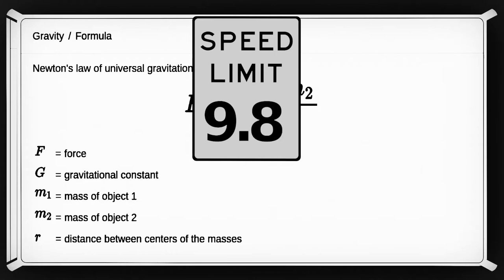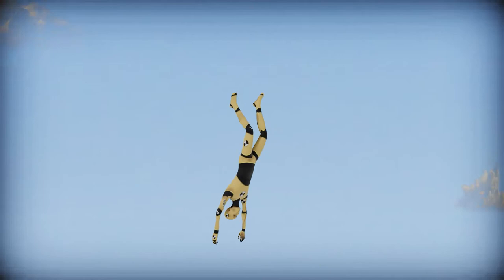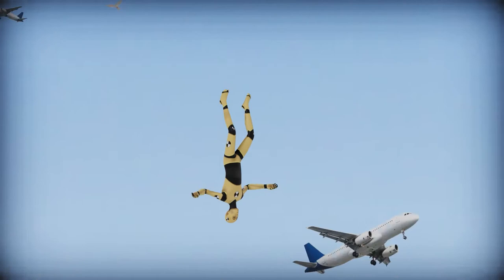Gravity accelerates everything toward the Earth at 9.8 meters per second squared. That means that if you fall for one second, you will be traveling at a speed of 9.8 meters per second, or 21.92 miles per hour. If you fell for 10 seconds, you would reach a speed of almost 220 miles per hour.